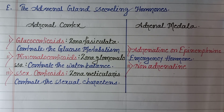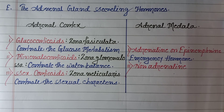Now let's talk about the hormones secreted from the adrenal gland. The adrenal gland is divided into two parts: the adrenal cortex and the adrenal medulla. From the adrenal cortex, three types of hormones are secreted. First is glucocorticoid, secreted from the zona fasciculata, which controls glucose metabolism. Second is mineralocorticoids, secreted from the zona glomerulosa, which controls the water balance of the human body. Third is sex corticoid hormone, secreted maximally from the zona reticularis, which controls the sexual characteristics of the human body.